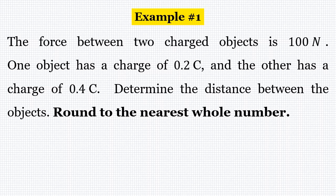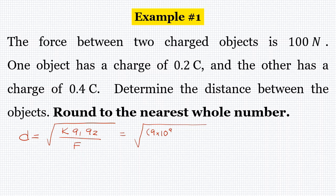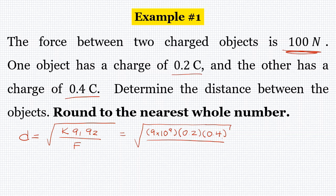Here's an example: the force between two charged objects is 100 newtons. This time we're given the force. One object has a charge of 0.2 Coulombs, and the other has a charge of 0.4 Coulombs. Determine the distance between the objects, rounded to the nearest whole number. Our distance equation is going to be the square root of K times Q1 times Q2 over the force. K is 9 times 10 to the 9th, Q1 is 0.2, Q2 is 0.4, and the force is 100 newtons.